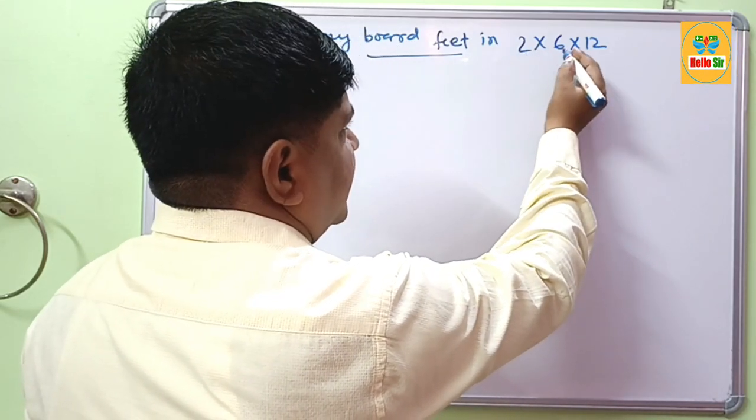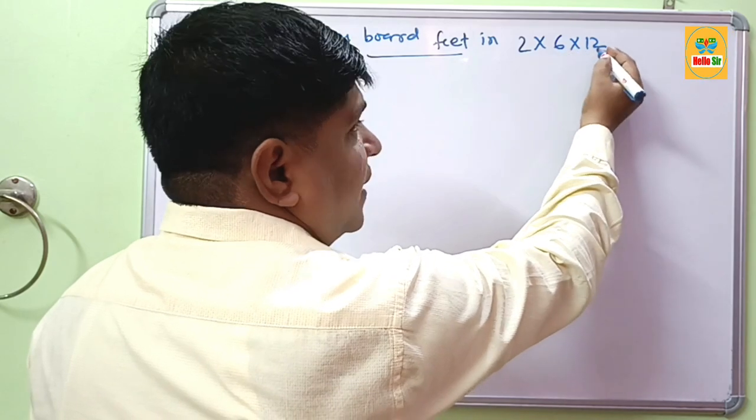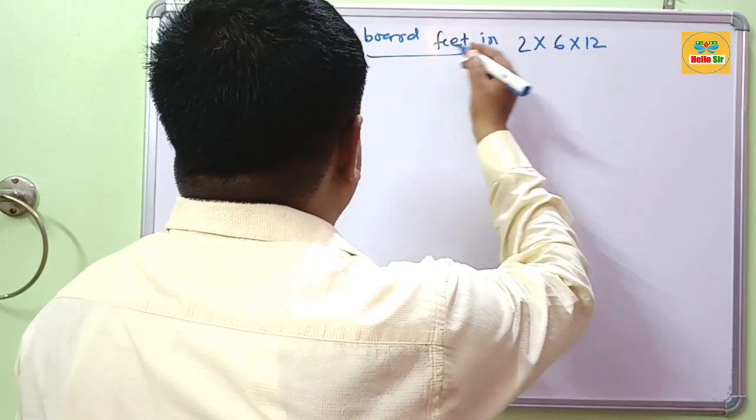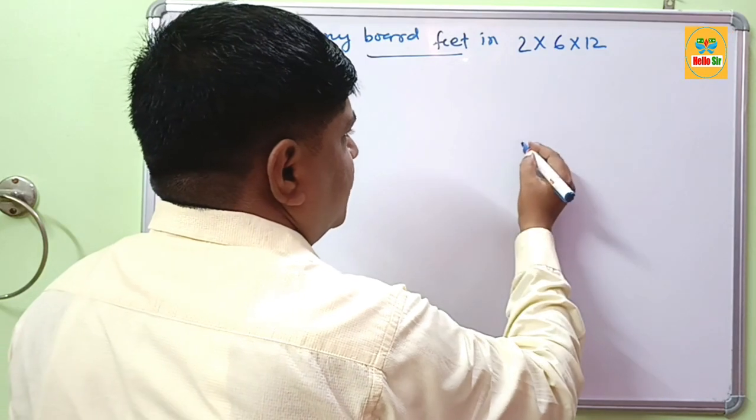2 inches in thickness, 6 inches in width and 12 foot in length. Suppose you have a wood log.